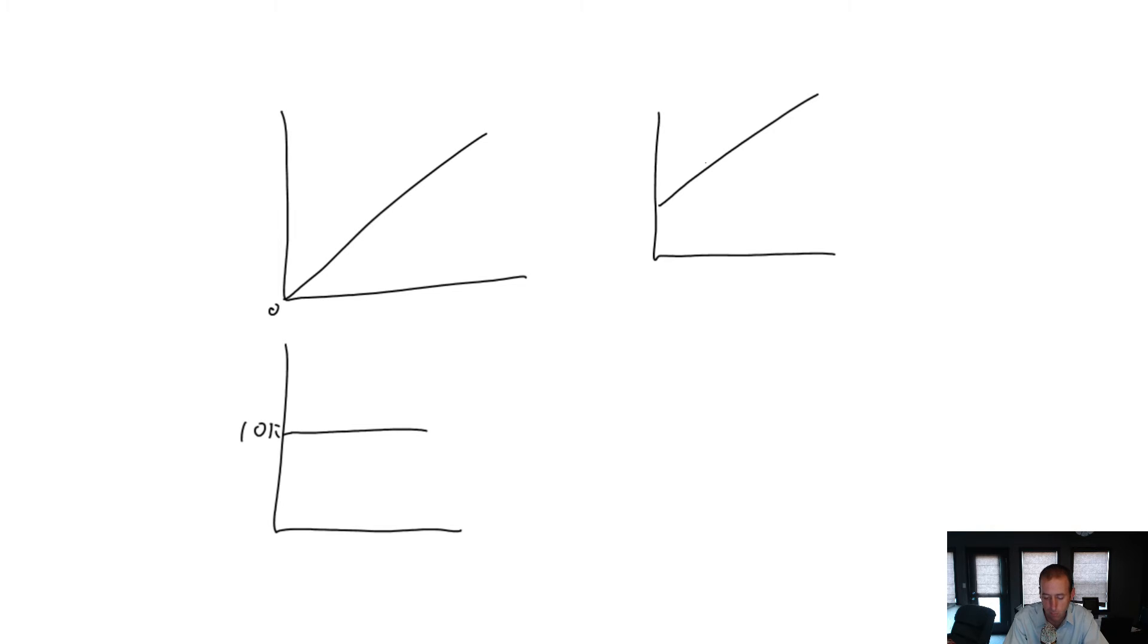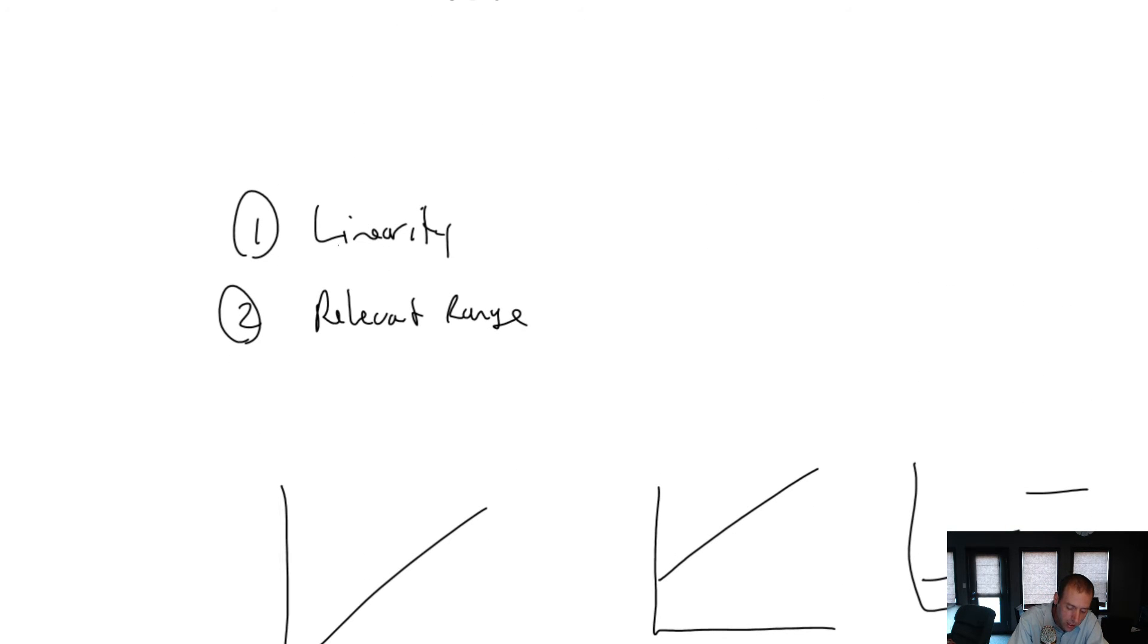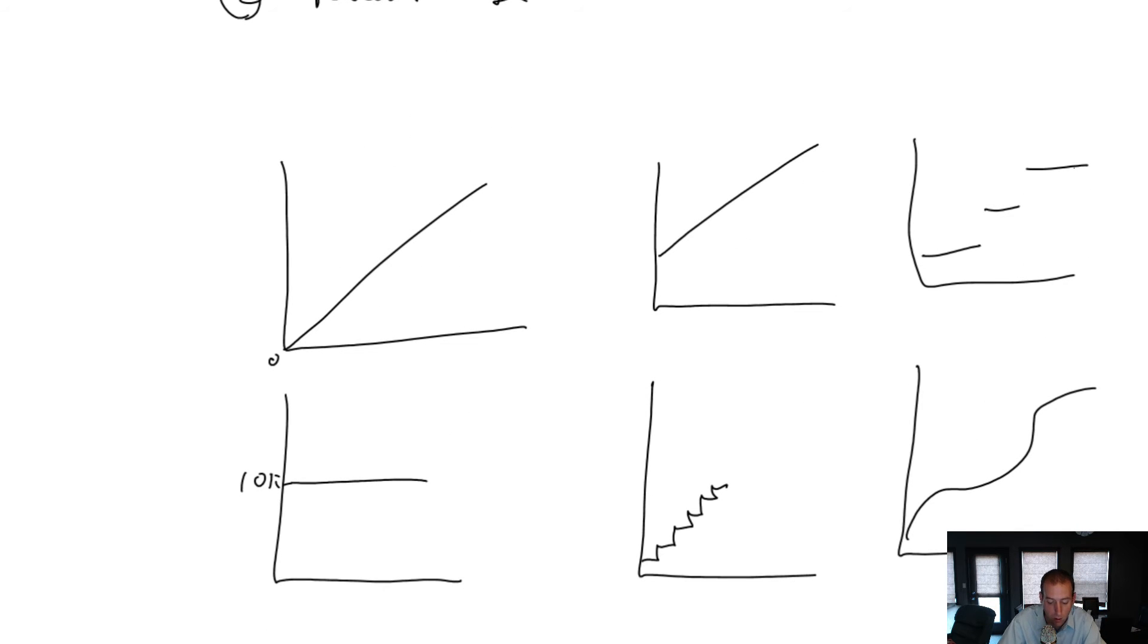Mixed means there's some portion of the cost that's variable and some portion of this cost that's fixed. There's also costs that will take a shape like this, almost like a staircase. There's costs that will be shaped more like big staircases. We can have curvy costs, we can have all sorts of behavior within our costs. But for our course, we assume costs are linear through the relevant range, even though some of these are not linear at all.